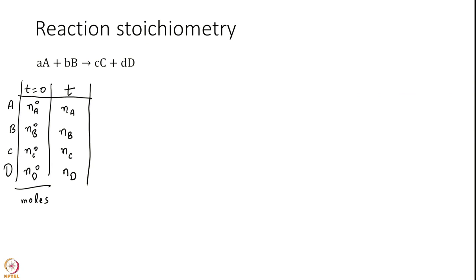The first thing to note is how much moles changed. The delta N is NA minus NA naught equal to delta NA. I can write the same thing for others. NB naught, NB and so on and so forth.